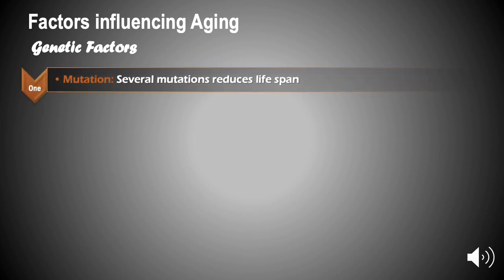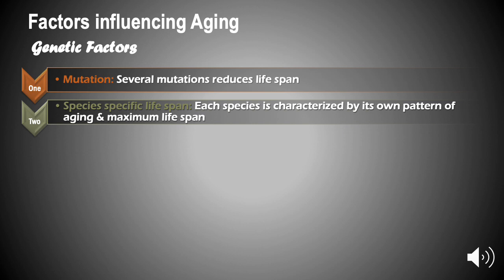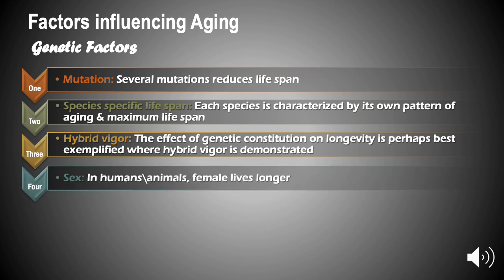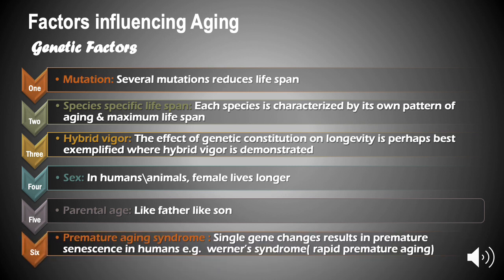Factors influencing aging — genetic factors: Mutation: several mutations reduce life span. Species-specific life span: each species is characterized by its own pattern of aging and maximum life span. Hybrid vigor: the effect of genetic constitution on longevity is perhaps best exemplified where hybrid vigor is demonstrated. In humans and animals, females usually live longer. Parental age: like father, like son.